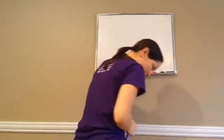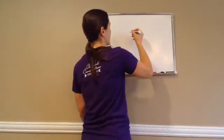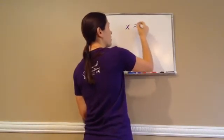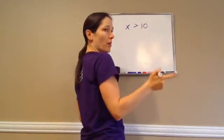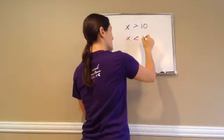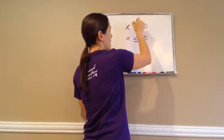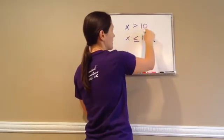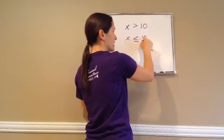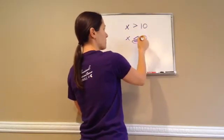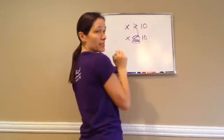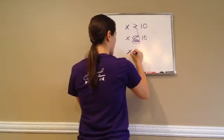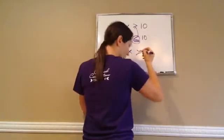Next is Negated Inequalities. When you have greater than or less than and you're graphing them on a number line — if X is greater than 10, what would be the opposite? X is less than 10, but it's also equal to 10, because the original did not have an equal sign. So the opposite of not having an equal sign is having an equal sign. They're going to write it like this: X is not greater than 10.